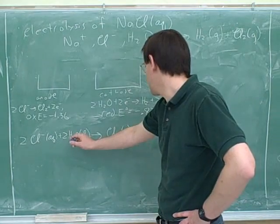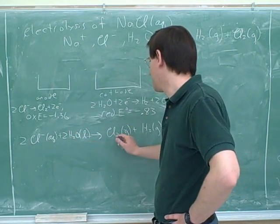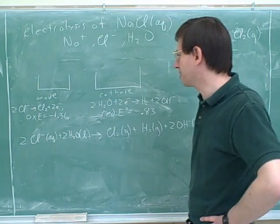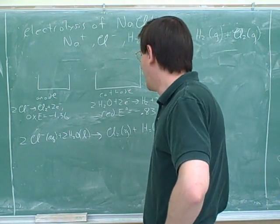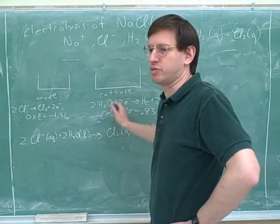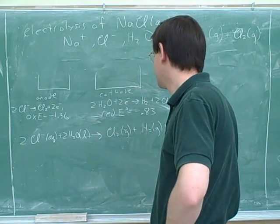So do I get this right? Two chlorides, two waters, and here we've got chlorine, a hydrogen, and two hydroxides. Okay. And this is balanced because the half reactions were balanced. So this will be balanced as well.